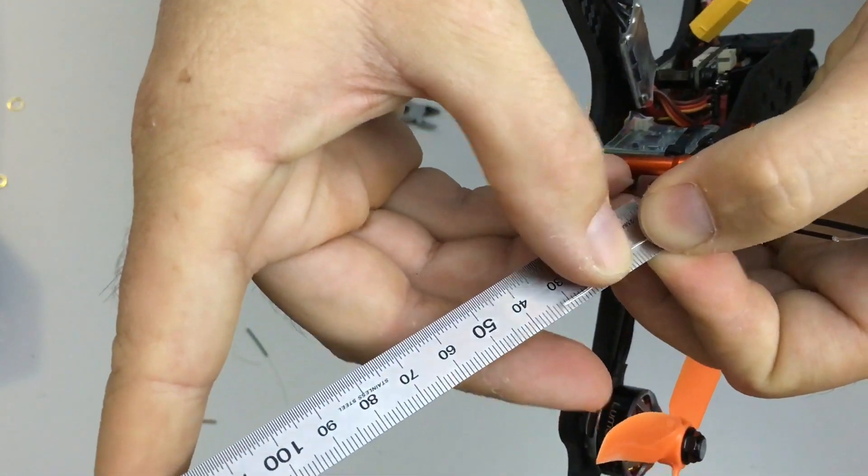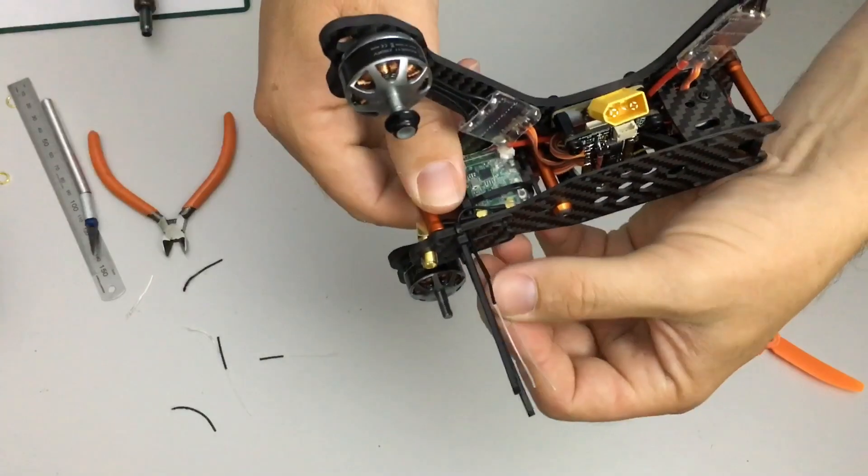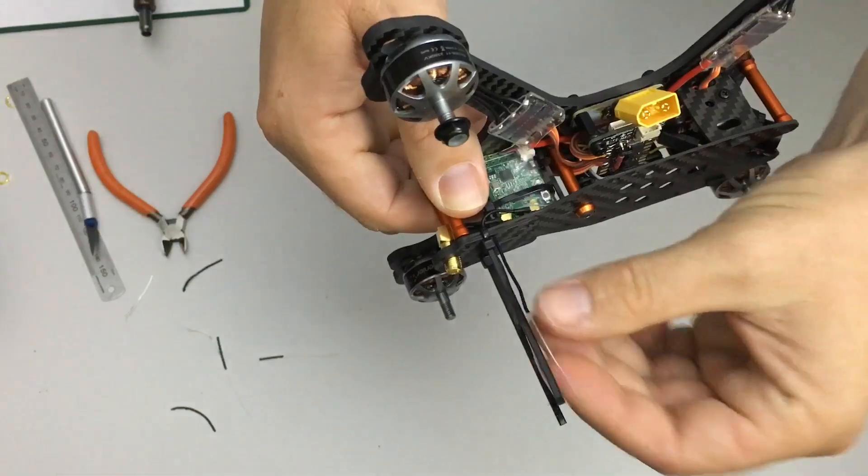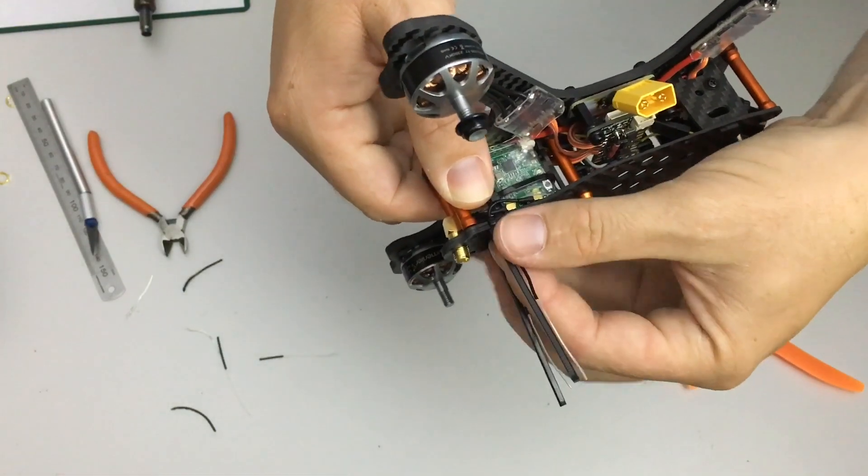Now 33mm exactly. So my antennas are now prepared. They're the right length, they've got the right amount exposed.